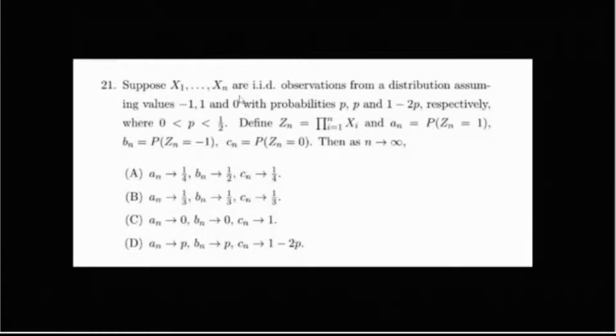Suppose x1 through xn are iid observations from a distribution assuming values minus 1, 1 and 0 with probabilities p, p and 1-2p respectively, where p lies between 0 and half. Define zn equals to product of the xi's and an is probability zn equals to 1, bn is probability zn equals to minus 1 and cn is probability zn equals to 0.